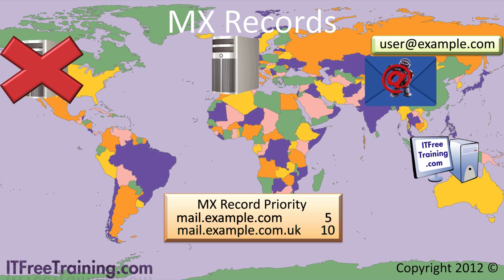I have seen this setup in many different companies. Having backup email servers stops emails from being bounced back to the sender during long outages. The backup email servers do not have to be on other sides of the world — some companies have multiple email servers at the same site. Remember, lower priority MX records will be tried first. Don't confuse priority with load balancing: if the server with the lowest priority is online, all email for that domain will be sent to that server.